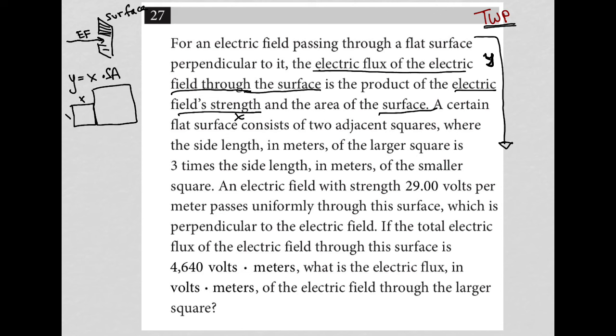Then it says an electric field with strength 29 volts per meter. So electric field strength, that's X, so X equals 29. Oh, and I have this other X for the side length. Maybe I should use a different variable. Let's call these A's. So I don't want any confusion. Let's say these are all side length A, and then these are side length 3A.